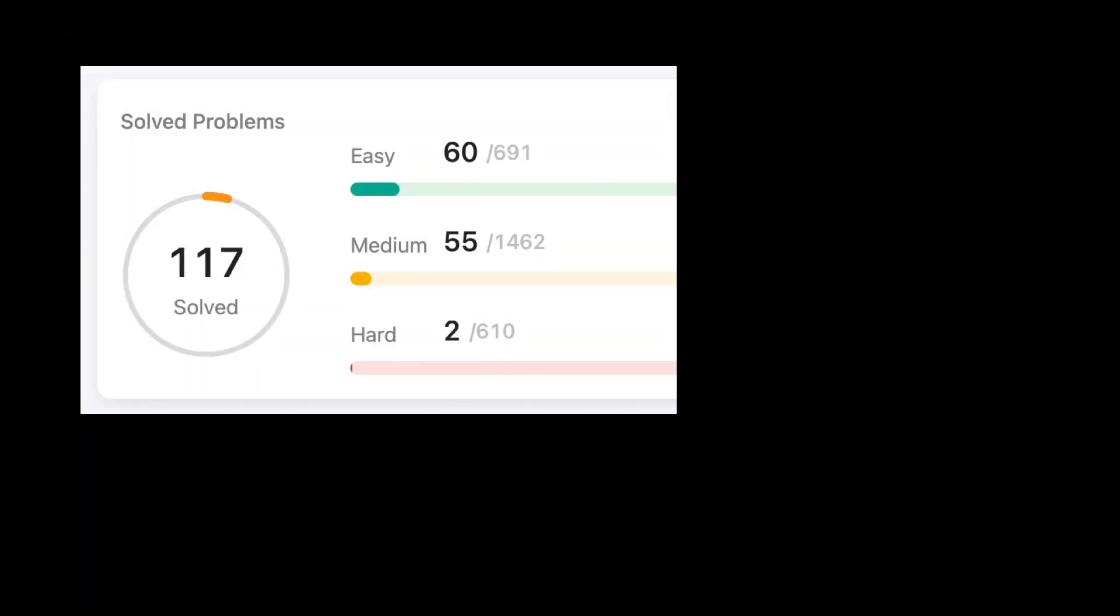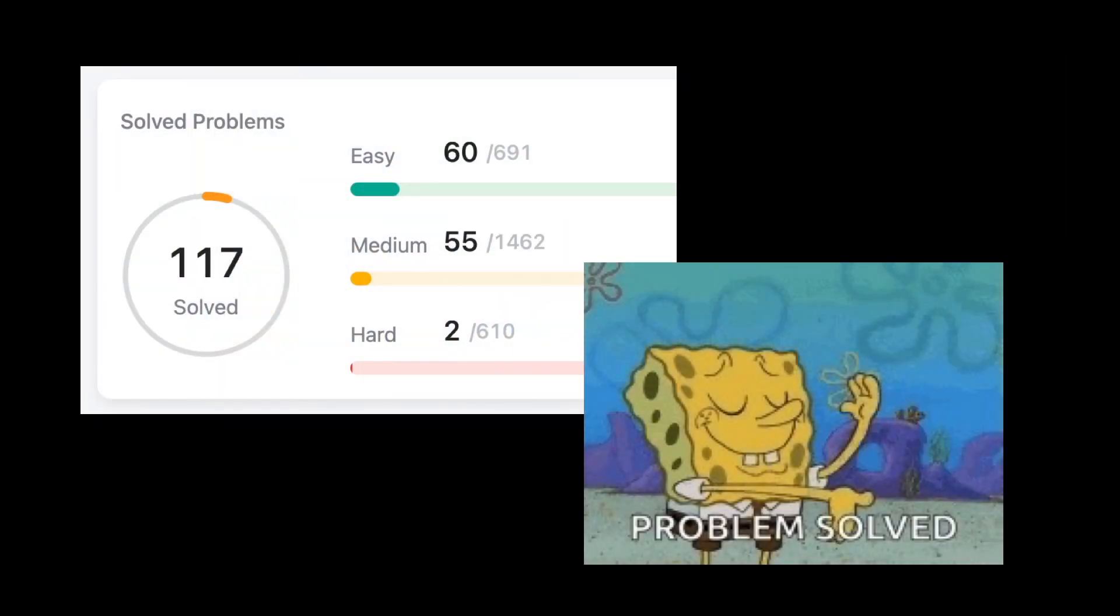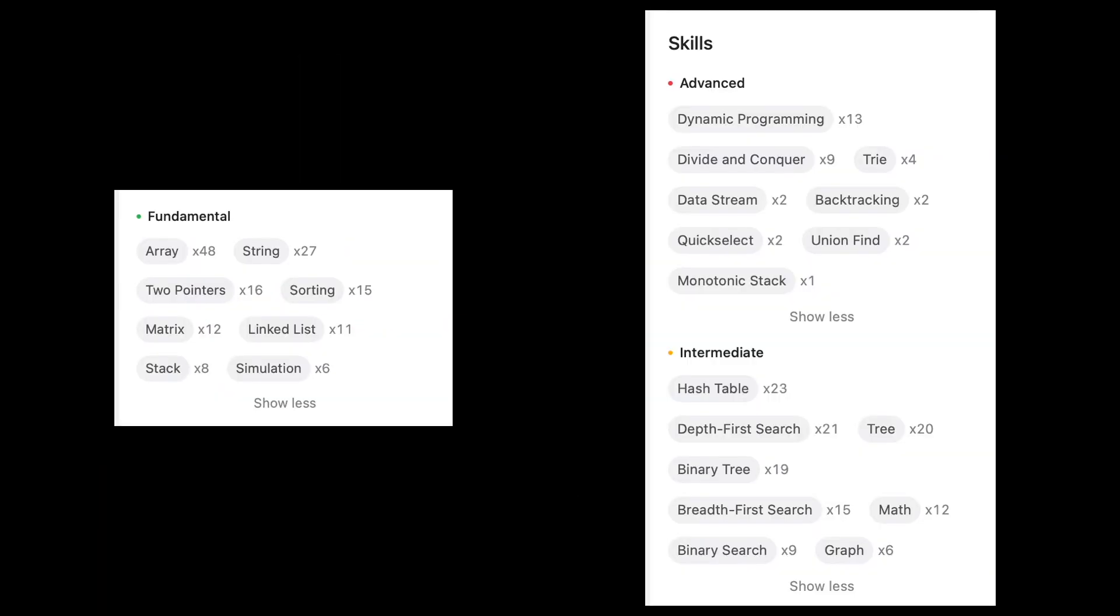So how many questions was it for me? How many did I solve before I was hired at FANG? Here it is: 60 easy, 55 medium, and 2 hard, which gives me just over 100 at 117. And these are the categories I solved problems in.